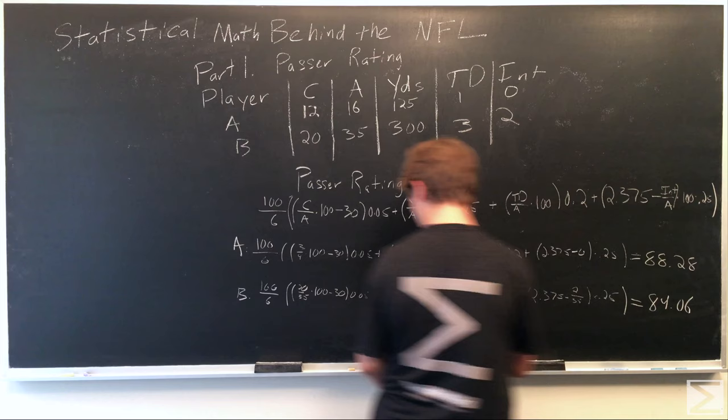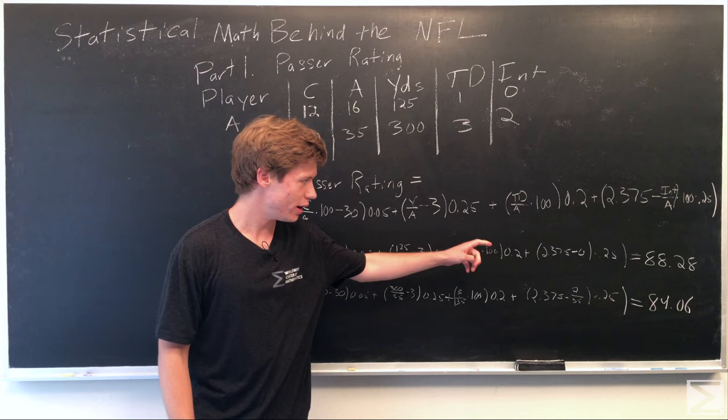When you plug all these in, player A ends up having a passer rating of 88.28 and player B has a passer rating of 84.06.